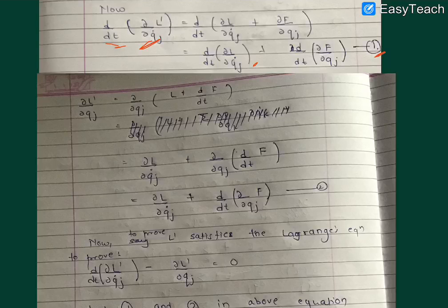Now we come to equation 2, where we have to find ∂L'/∂Q_j. We will put the value of L prime here and we get ∂L/∂Q_j plus ∂F/∂Q_j.